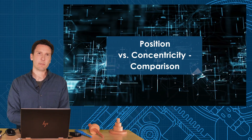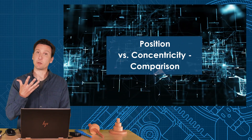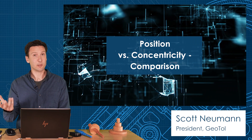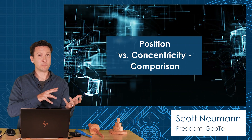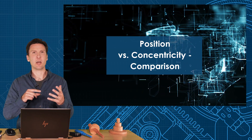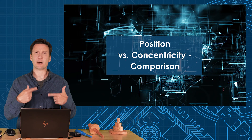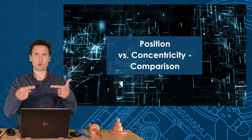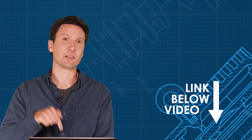Welcome to this video. We're going to talk about the differences between position and concentricity. It's a little bit controversial because they've removed this symbol in the 2018 standard, but I still get a lot of questions about what's the difference between coaxiality and concentricity. This is an excerpt from unit 13 of our online GD&T program, which you can find in the link in the description below.